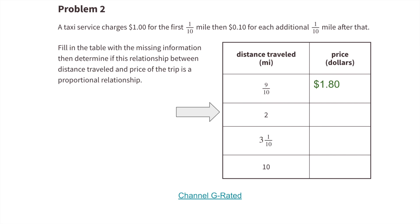When the distance traveled is 2 miles, that's 20-tenths. One tenth is used for the first tenth of a mile at $1.00, leaving 19-tenths or 19 dimes, which is $1.90. So $1.00 plus $1.90 equals a total of $2.90 to travel 2 miles.